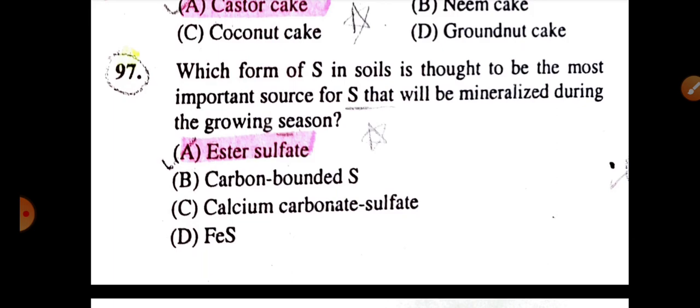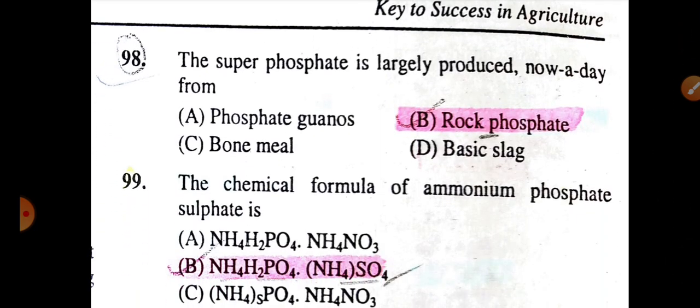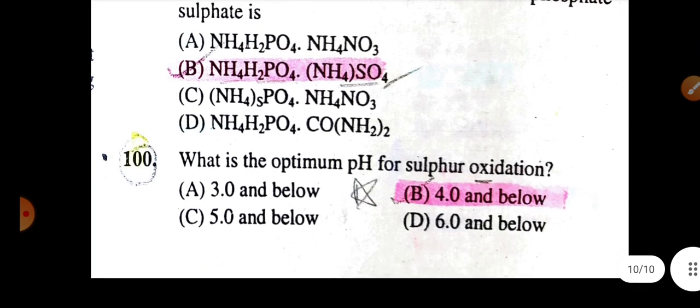Which form of sulfur in soil is thought to be the most important source of sulfur that will mineralize during the growing season is ester sulfate. Superphosphate is largely produced nowadays from rock phosphate. The chemical formula of ammonium phosphate sulfate is (NH4)3H(PO4)(SO4). What is the optimum pH for sulfur oxidation is 4 and below.